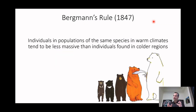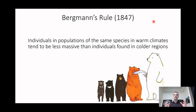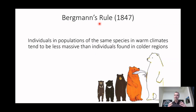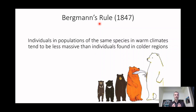Different ethnic groups are going to have different types and shapes of body, and these have developed over thousands of years and hundreds of generations based on two rules. Bergmann's Rule states that if you're from a colder climate you have a more massive body, and if you're from a warmer climate you have a smaller body.